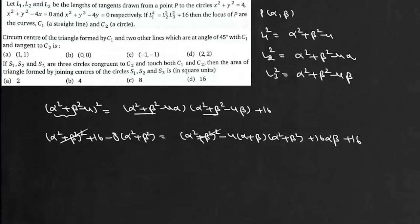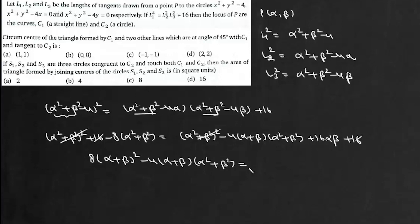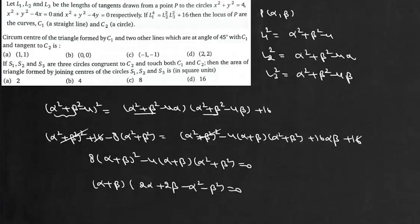The (α² + β²)² terms and the 16 cancel from both sides. Rearranging and taking 8(α + β)² to the right-hand side, then factoring out 4, gives: 4(α + β)(2α + 2β − α² − β²) = 0.